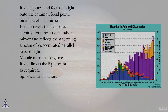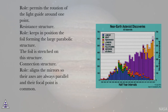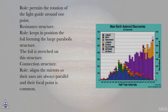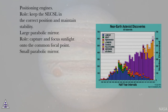Spherical Articulation — permits the rotation of the light guide around one point. Resistance Structure — keeps in position the foil forming the large parabolic structure; the foil is stretched on this structure. Connection Structure — aligns the mirrors so their axes are always parallel and their focal point is common. Positioning Engines — keep the system in the correct position and maintain stability.